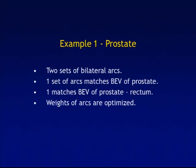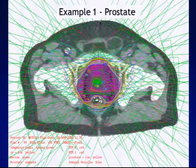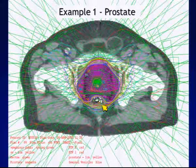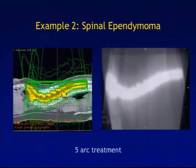As an example, for a prostate case we used two sets of bilateral arcs — one set matching the beam's eye view of the prostate and one matching the beam's eye view of the prostate minus the rectum — and then we optimized the weights of the individual arcs. This is a screen capture from Render Plan, Electa's old planning system. The purple is the 95% isodose cloud, and the red is the target. You get very conformal dose and are able to curve around the rectum. For a spinal ependymoma case, even with this simple approach to IMAT, you can get very conformal dose distributions.